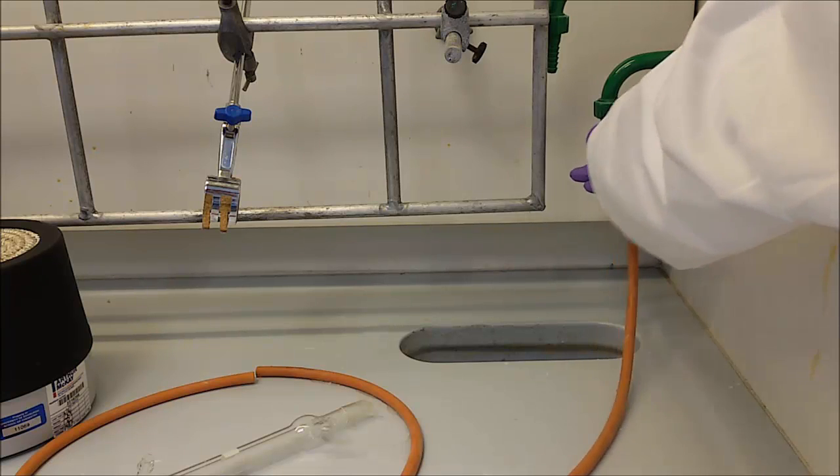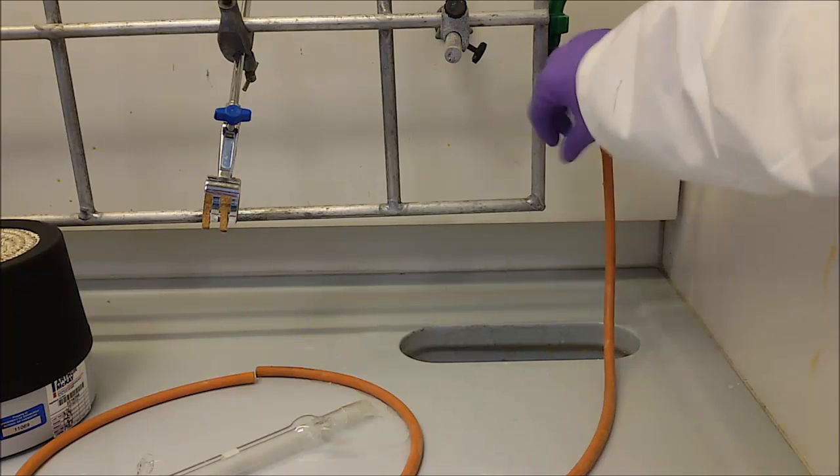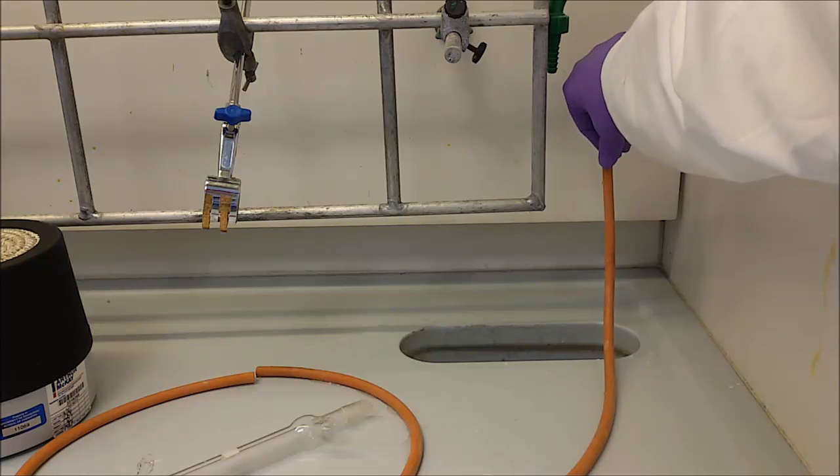Firstly place one end on the tap, then connect the second end of this to the condenser. This will be the water inlet so has to be on the arm of the condenser that is further from the heating source.